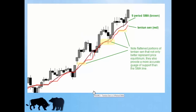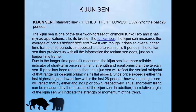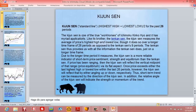The following line is called the Kijun line. The Kijun line is going to take the highest plus the lowest divided by two for the last 26 days. This is called the standard line. Now, what do we use these two lines for?